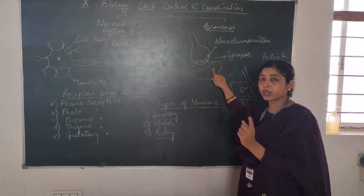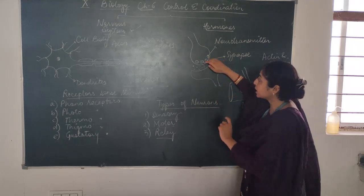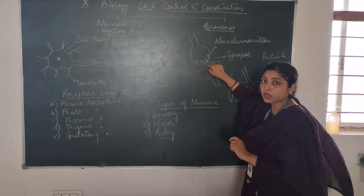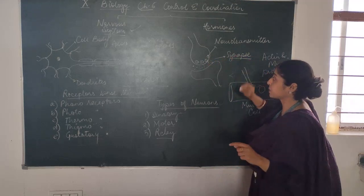One neuron's nerve ending and the other neuron's dendrite will be connected, and there's a gap that connects both of them. This is the synapse.